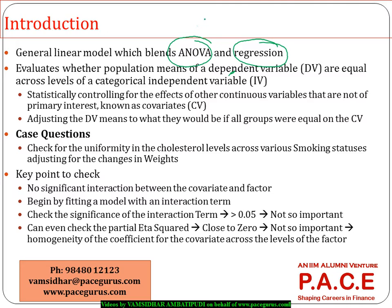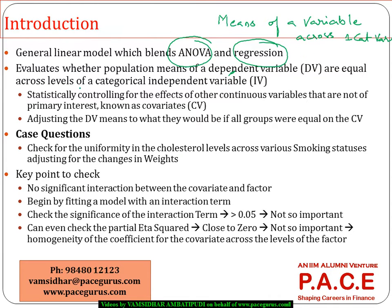ANCOVA actually blends ANOVA as well as regression. It evaluates population means of a variable — the same thing we do in ANOVA — comparing the means of a variable across one categorical variable. But here we are statistically controlling the effect of other continuous variables.